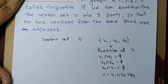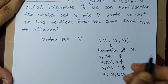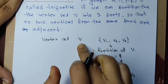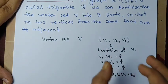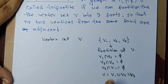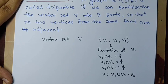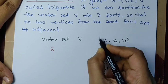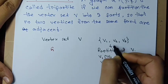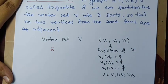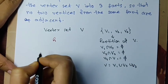We call graph G a tripartite graph if the vertex set V of G has a partition V1, V2, V3 — subsets that are pairwise disjoint and whose union is the whole vertex set V — such that no two vertices from the same part are adjacent. That means no two vertices from V1 are adjacent, no two from V2 are adjacent, and no two from V3 are adjacent.